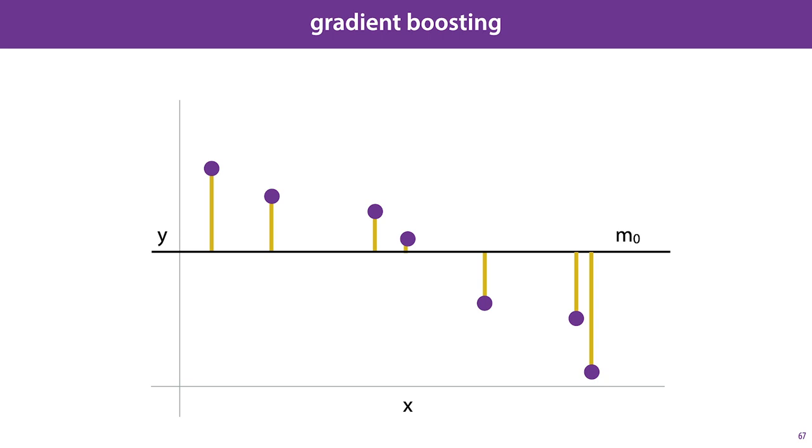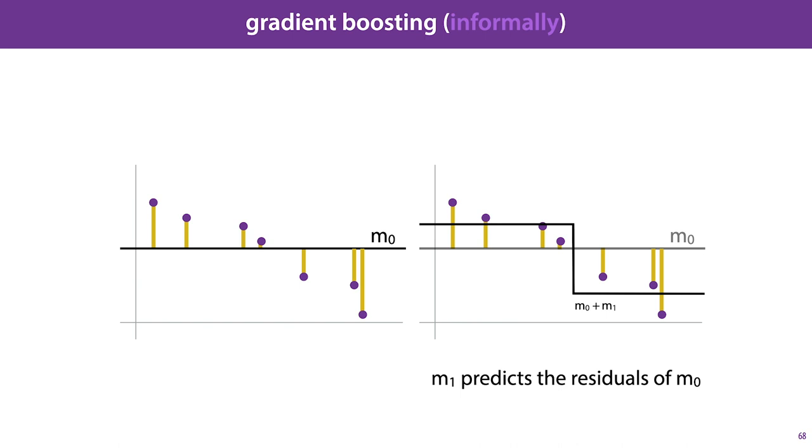We start with a model M0 that just predicts a constant value. We will minimize the squared error, so we know that in this case the optimal constant for M0 to output is the mean of the data. The next model in our ensemble, M1, is a prediction of the residuals of M0. The new ensemble model, which combines M0 and M1, adds the predictions of M1 to the predictions of M0.